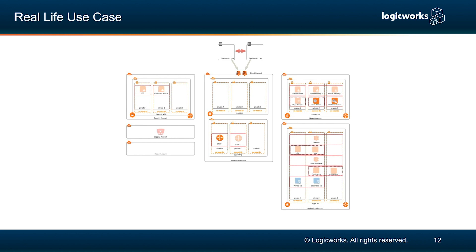In the applications account, they have a VPC with different shared applications like their JIRA tools, their Atlassian Suite like Confluence, and the databases that hold most of that information. The separation of accounts allows for granular access and management of each account — you can manage your logging account with the associated CloudTrail and Config logs, the security account that handles threat detection and vulnerability scanning, and every other application account thereafter.